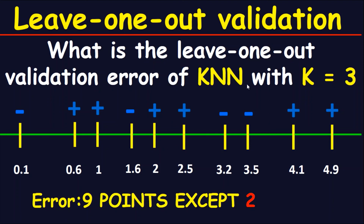Finally, we can say that the leave-one-out validation error of K-Nearest Neighbor when k equals 3: we have nine points considered as errors. However, point 2 is not an error, so all points are errors except one. Thank you for watching.